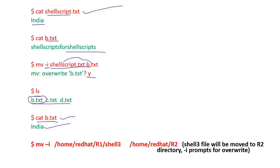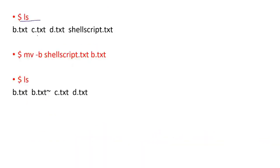You can also see how mv moves directories from one directory to another. You specify the source directory and the destination directory — for example, moving shell3 directory. If the destination is already a directory, it will prompt for confirmation. Using ls you can see the files available, and you can see the backup file is marked with a tilde (~) symbol.